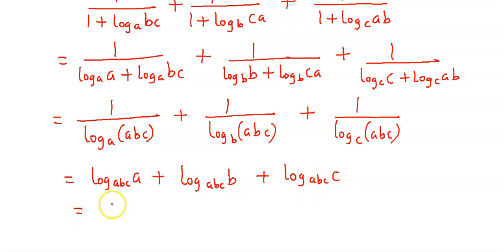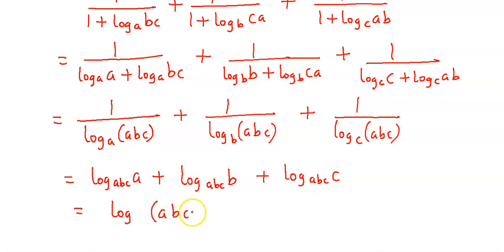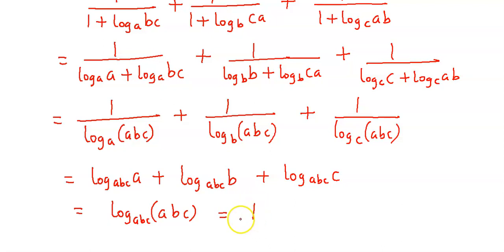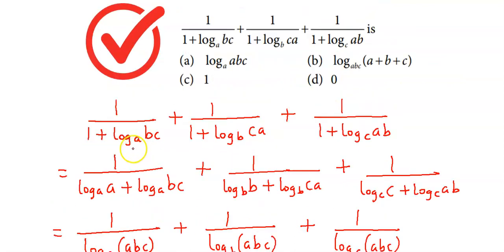अब base same है सारे log terms का और बीच में addition है, तो conversion हो जाएगा multiplication में — so this will be log of A into B into C and base is again ABC. अब log of ABC to the base ABC की value होती है 1, so our final answer is 1. Option देखते हैं — सही answer है option C.